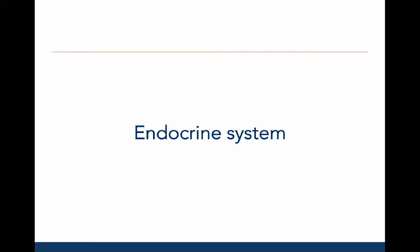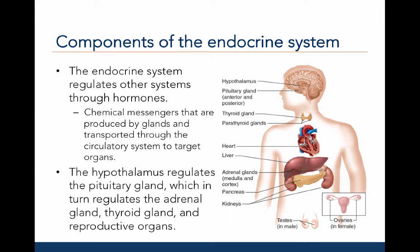So far, we have discussed the systems that contribute to the growth patterns in height and weight, namely the skeletal, muscular, and adipose systems. Now let's examine the endocrine system, which is one of two systems that controls the growth and maturation of all body systems discussed so far. The endocrine system regulates other systems through hormones, which are chemical messengers produced by glands and transported through the circulatory system to target organs. The hypothalamus in the brain regulates the pituitary gland, which in turn regulates the adrenal glands, thyroid glands, and reproductive organs, which secrete sex hormones.